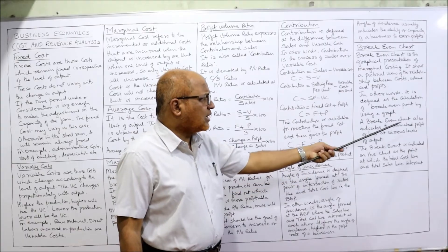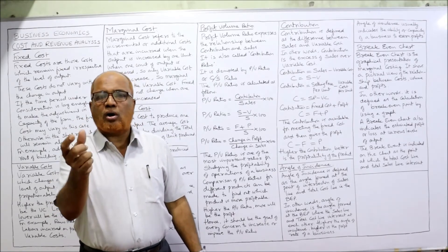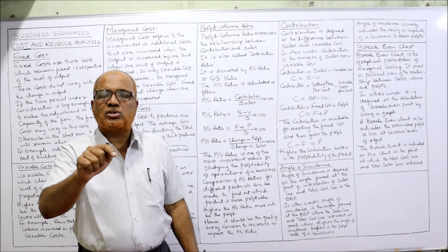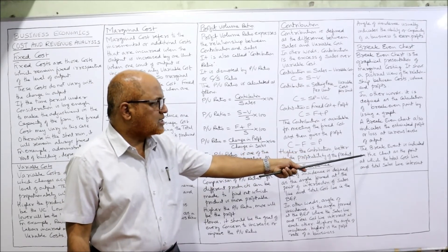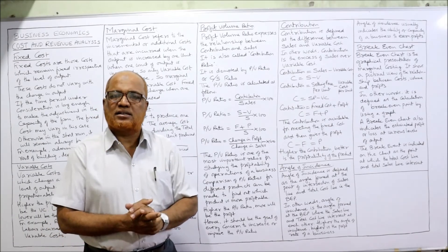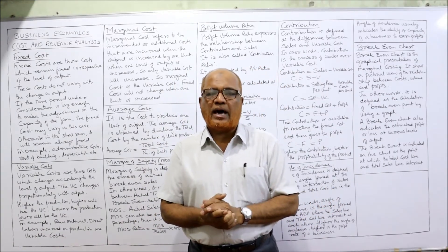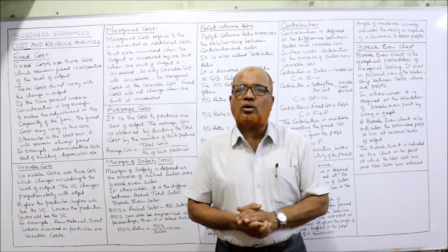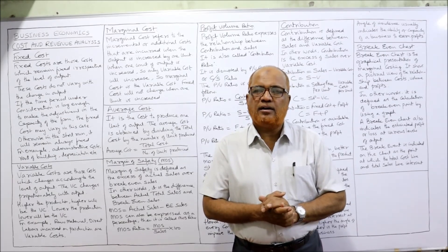Apart from finding the BEP, the break-even chart also indicates estimated profit or loss at various levels of output. At different levels of output, how much profit or loss there would be can also be ascertained by drawing a break-even chart. This concludes the discussion on different terms used in cost and revenue analysis, which will be asked in short questions. We will take up the next topic in the next video.